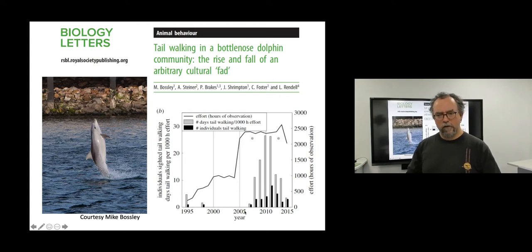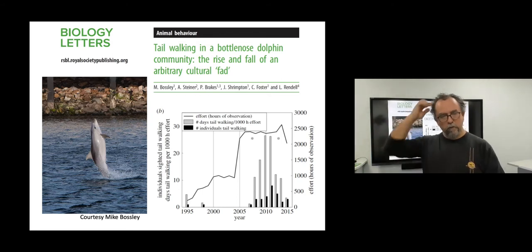So the data plotted here show observer effort and the number of days of tail walking and the number of individuals tail walking over a 20 year monitoring period. And we can see that where Billy was released in 1995 there's just a small amount of activity but then after 2005 there's a really big burst in the community of animals showing this tail walking behavior. And the interesting thing is, or one of the interesting things is that this is when Billy, the original dolphin who introduced the behavior into the population, is known to have died. So after this animal died, animals in this population started showing this behavior a great deal.